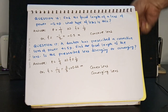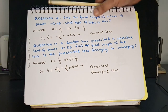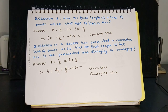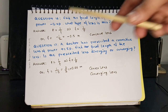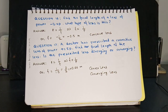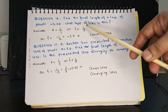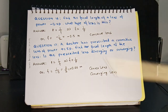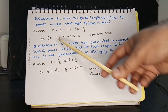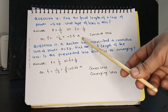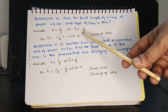Question 16: Find the focal length of a lens of power −2.0 D. What type of lens is this? Using P = 1/f, we get f = 1/P = −0.5 meters. The negative sign shows this is a concave lens.